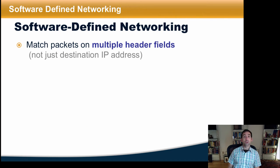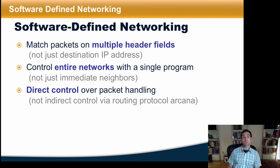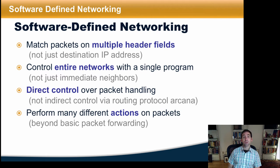Software-defined networking allows some promise because it allows routers and switches to match packets on multiple header fields, rather than just the destination IP address. It allows a network controller to control entire networks with a single program, possibly even including remote autonomous systems as opposed to just immediate neighbors. It provides mechanisms for direct control over packet handling, rather than indirect control via various routing protocol arcana. And it offers the ability to perform many different actions on packets beyond simply just forwarding them.